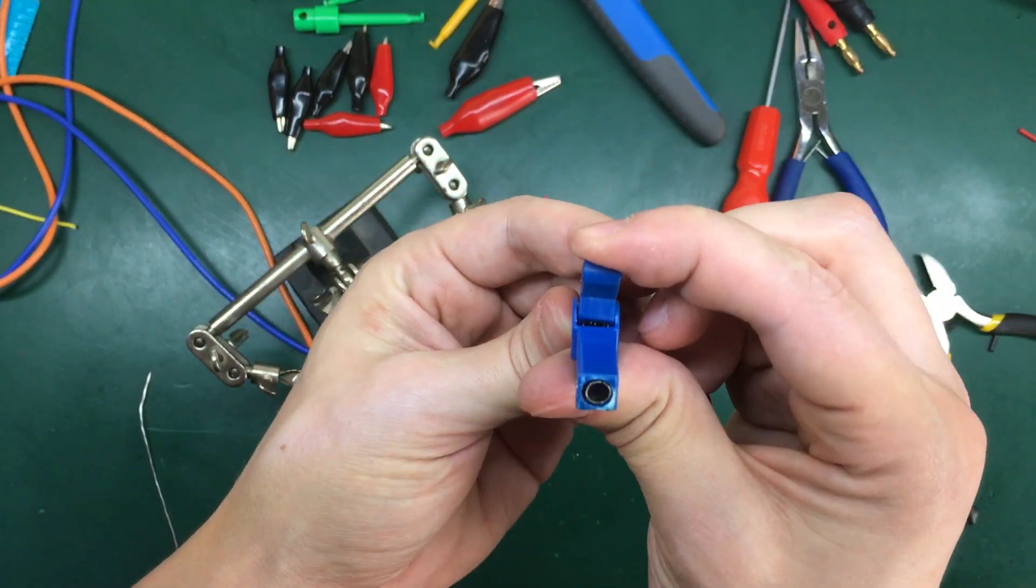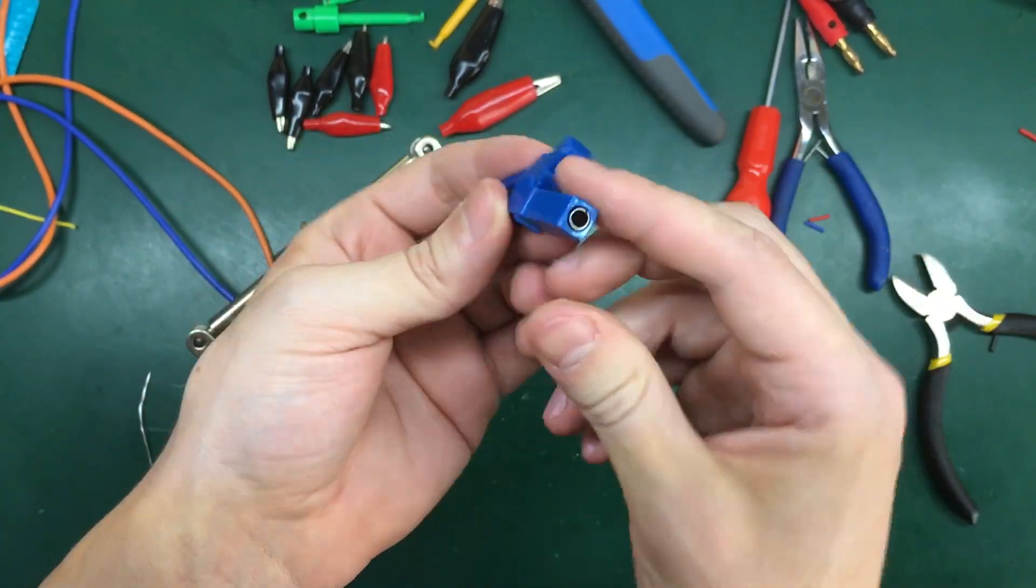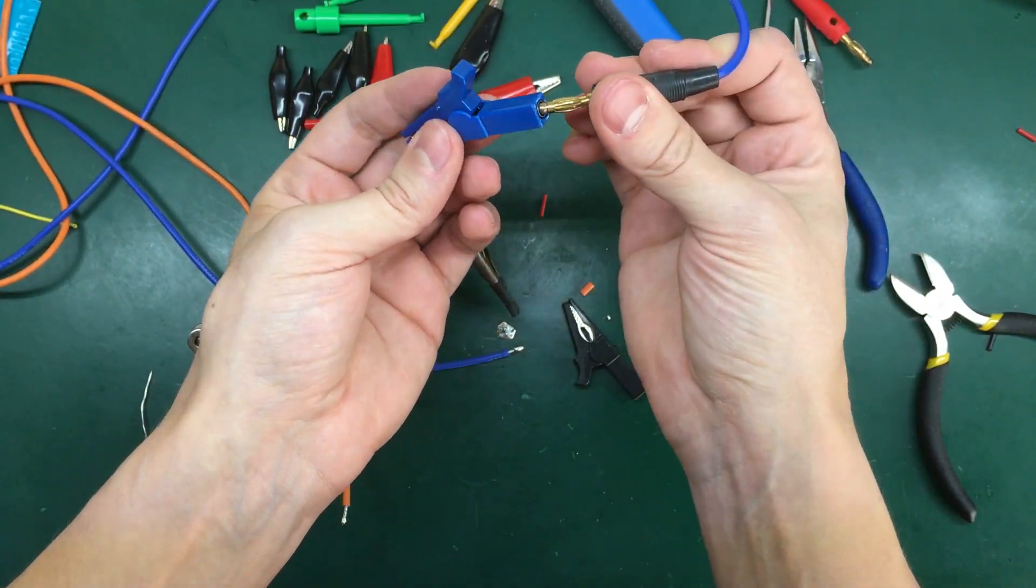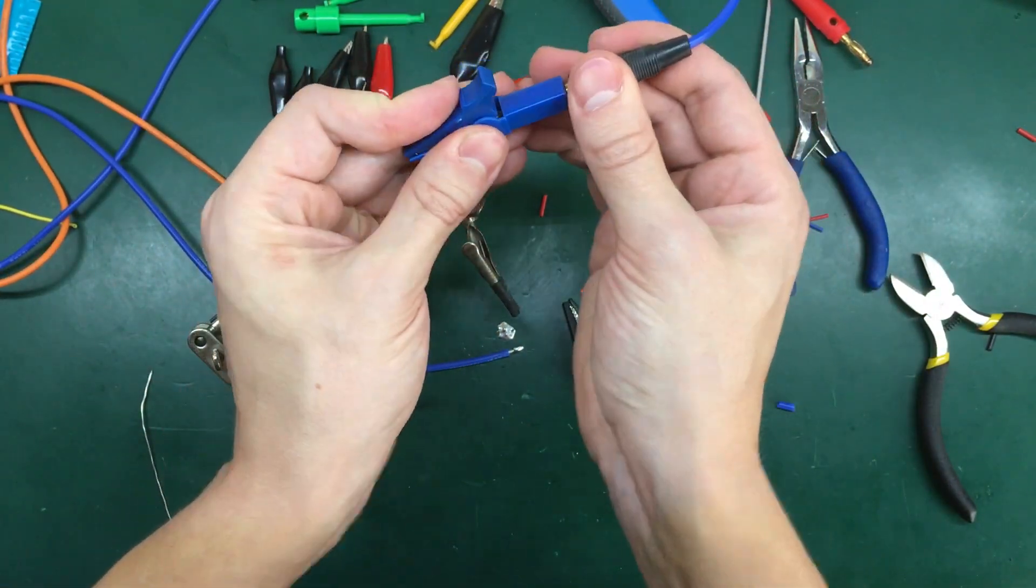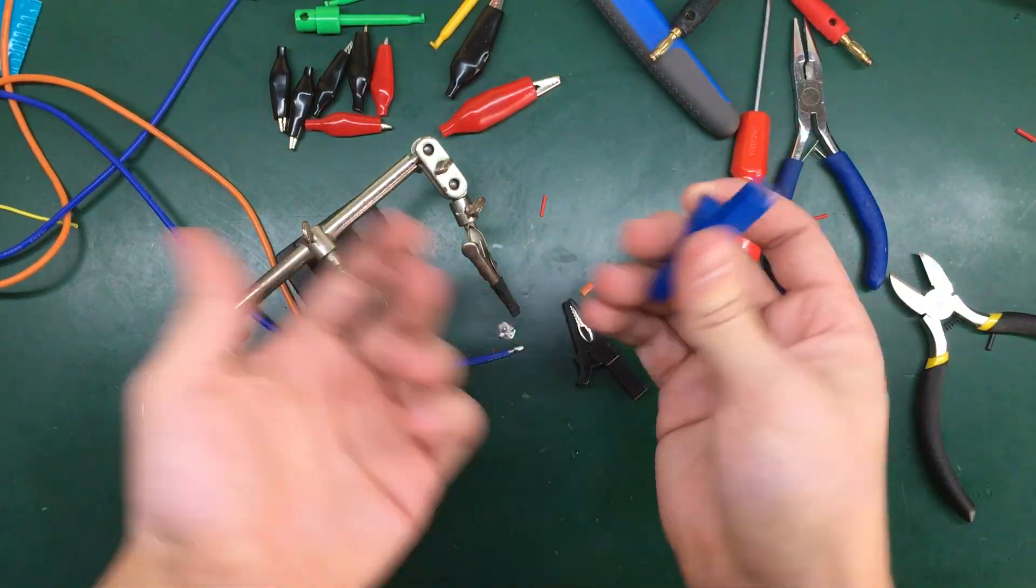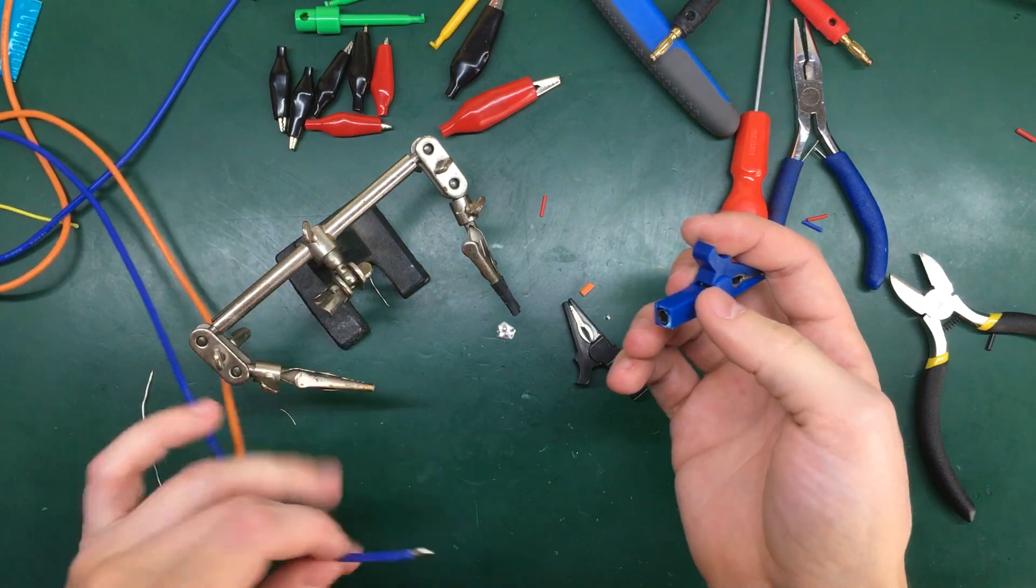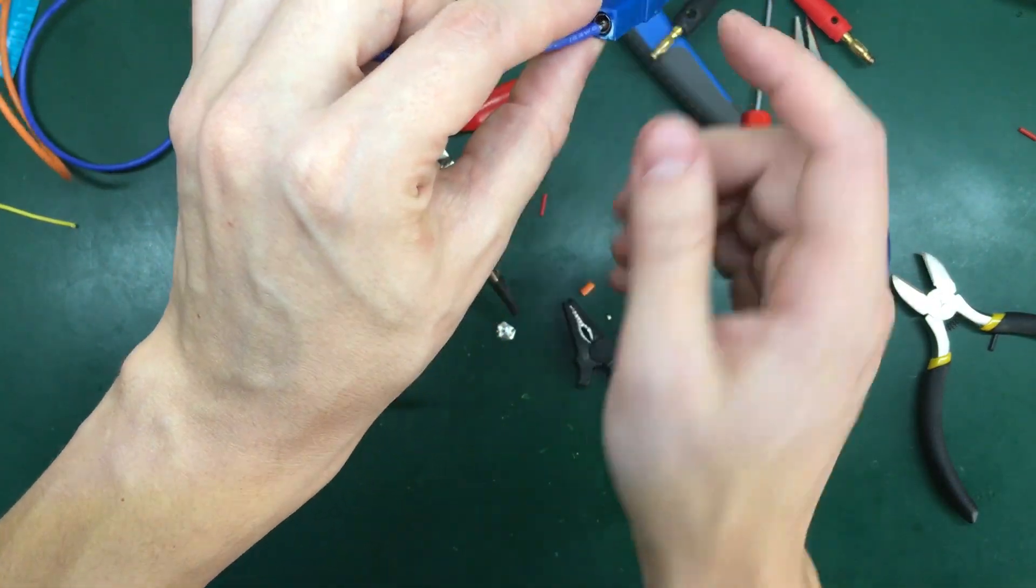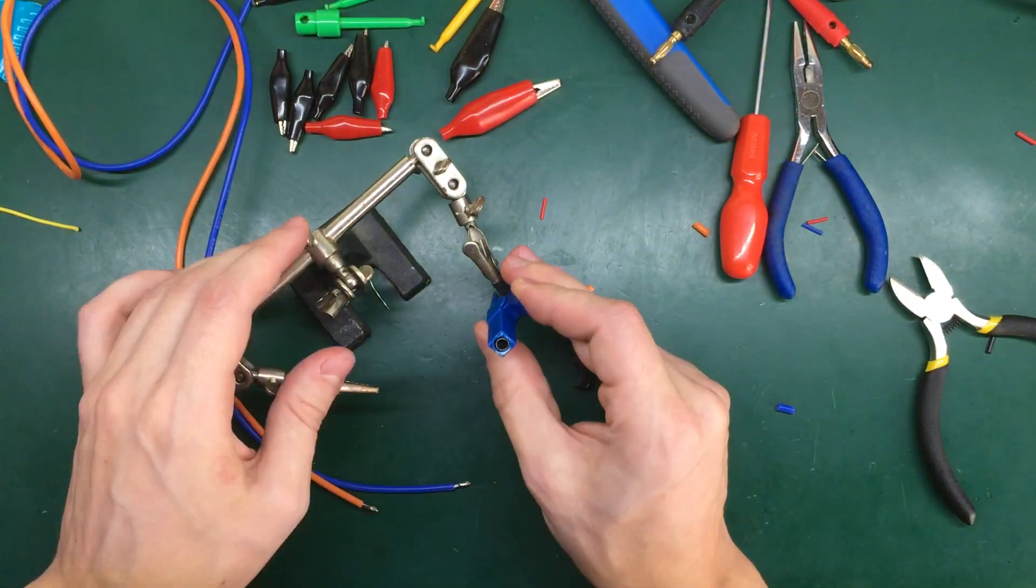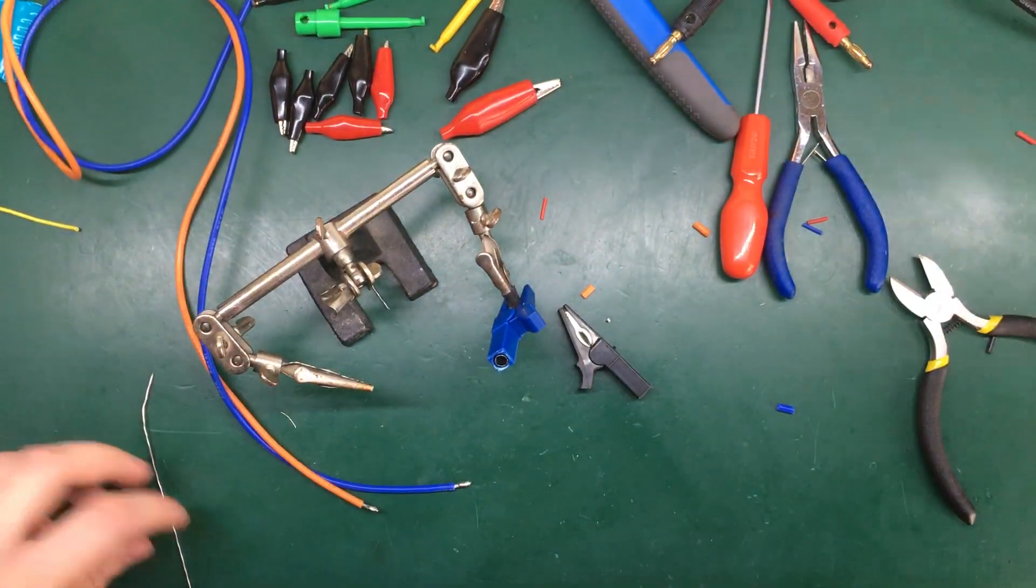Now these bigger alligator clips are intended to be used with 4 mm banana jacks plugged onto their back. But I don't want to waste another set of banana jacks. So I'm just going to solder the wire directly to the metal part of the alligator clip. And for that first I'm going to add some solder.